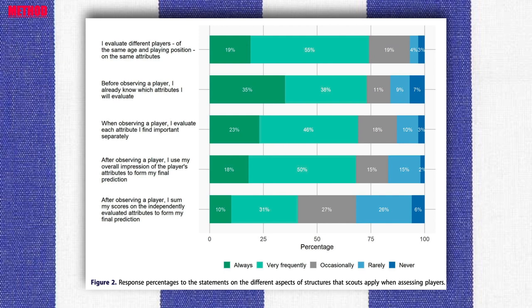The figure presents the response percentages to the statements on the different aspects of structure in scouts' talent identification process. Overall, scouts indicated that they applied a very structured process when observing players. Approximately 74% of scouts indicated that they always or very frequently evaluated different attributes separately when observing a player. Although scouts seemed to apply a structured approach in defining and evaluating separate skills, 68% always or very frequently used their overall impression to form their final prediction, while only 41% always or very frequently summed independently evaluated attributes to form their final prediction.